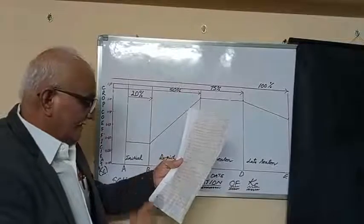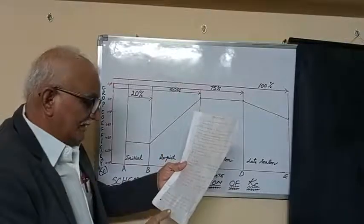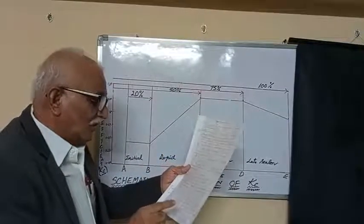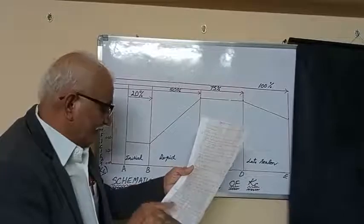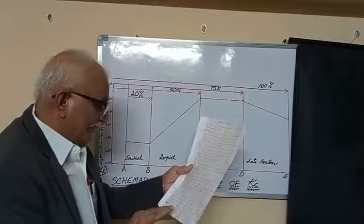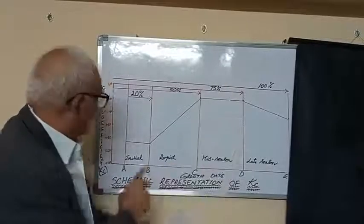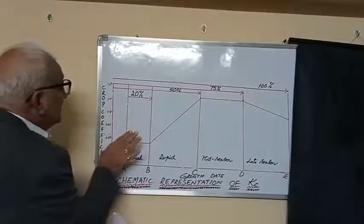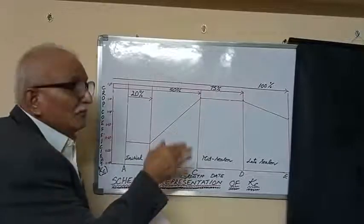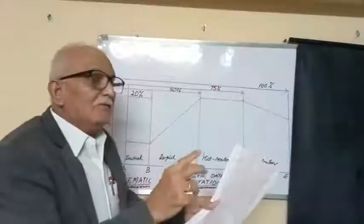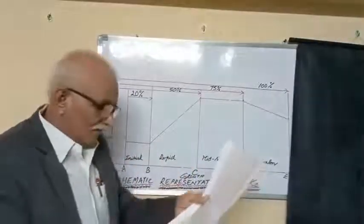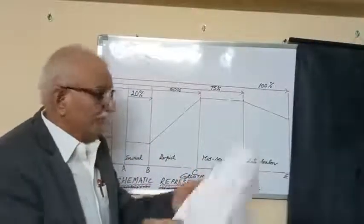For irrigation scheduling purposes, daily values of crop ETC can be estimated from the crop coefficient. ETO into KC is equal to ETC, the crop water requirement.